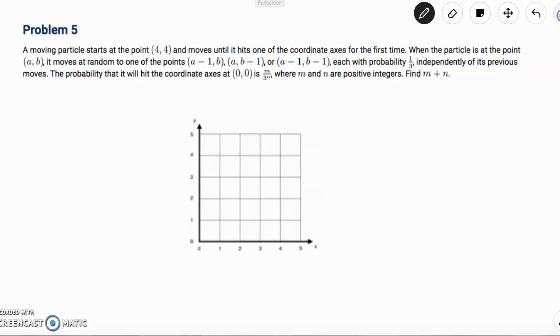A moving particle starts at (4,4) and moves until it hits one of the coordinate axes for the first time. When the particle is at point (A,B), it moves at random to one of the points (A-1,B), (A,B-1), or (A-1,B-1), each with probability 1/3, independently of its previous moves. The probability that it will hit the coordinate axes at (0,0) is M over 3 to the N, where M and N are positive integers. Find M plus N.